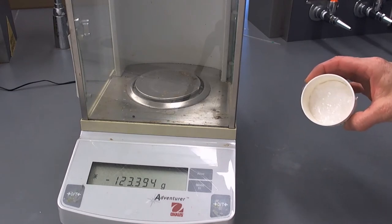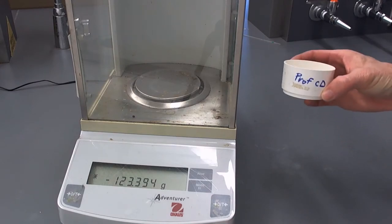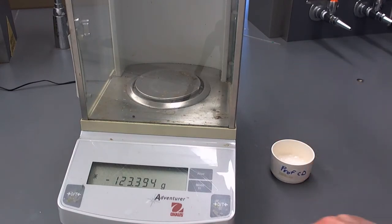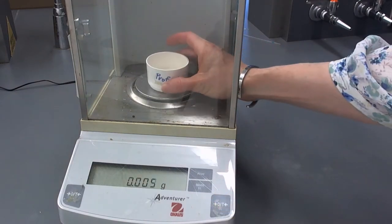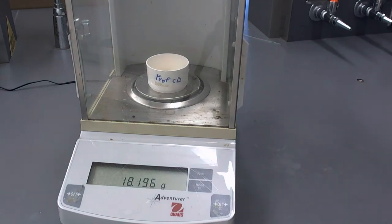The first thing we want to do after vacuum filtration is to measure the mass of the Buechner funnel with the filter paper and our solid. We tare out the balance, set that on there, record the mass in our notebook. This is the wet mass.